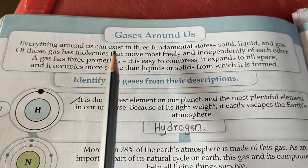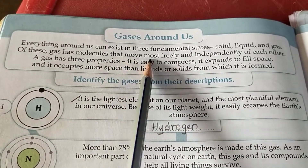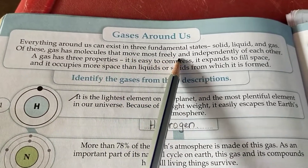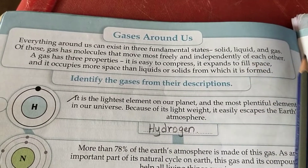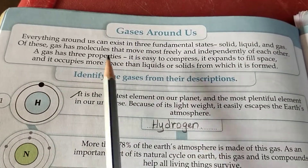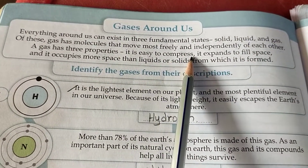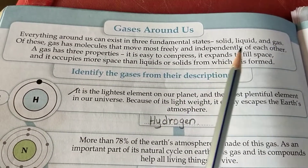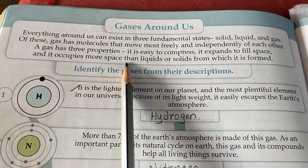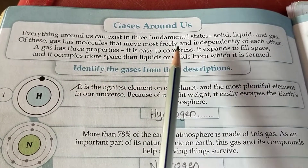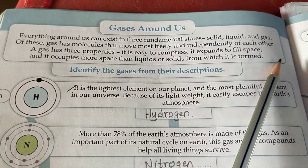Gas has molecules that move most freely and independently of each other. Gas has 3 properties: it is easy to compress, it expands to fill space, and it occupies more space than liquids or solids from which it is formed.